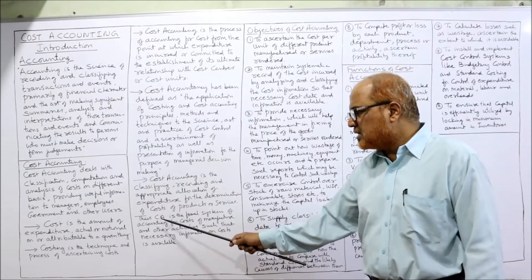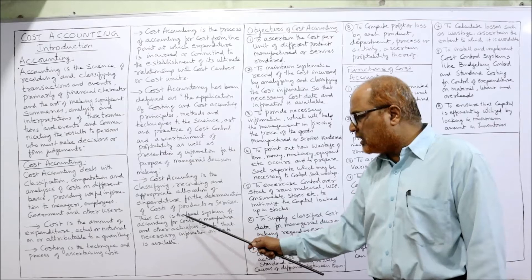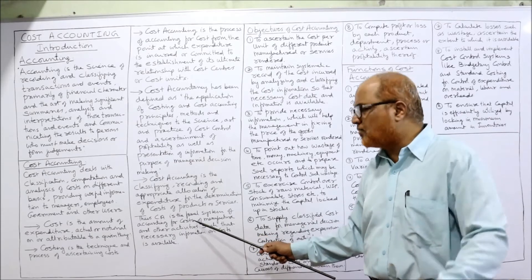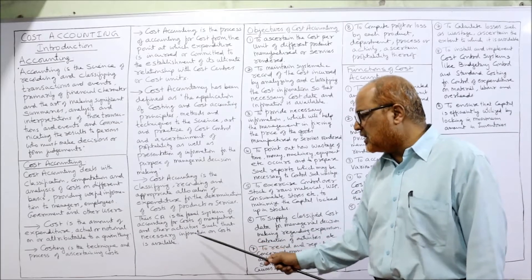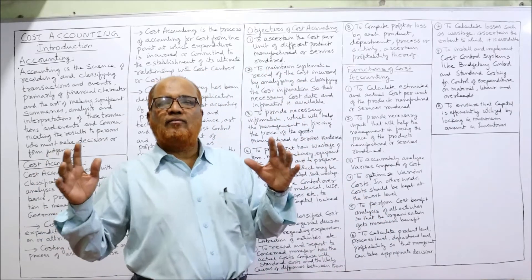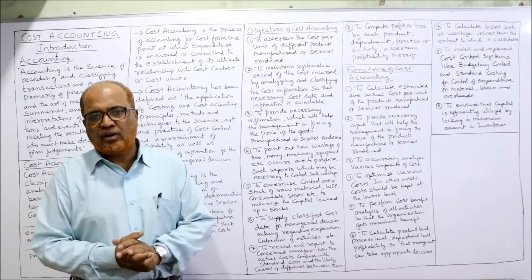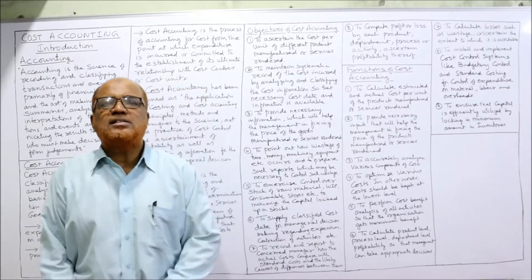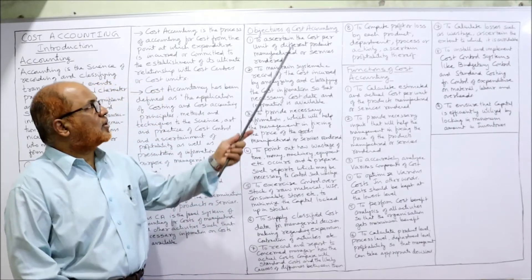Cost accounting is the formal system of accounting for cost — we account mainly for the purpose of ascertaining the cost of manufacture and other activities, such that necessary information on cost is always available to management. This is the complete meaning of the term cost accounting. Now the second topic is the objectives of cost accounting.